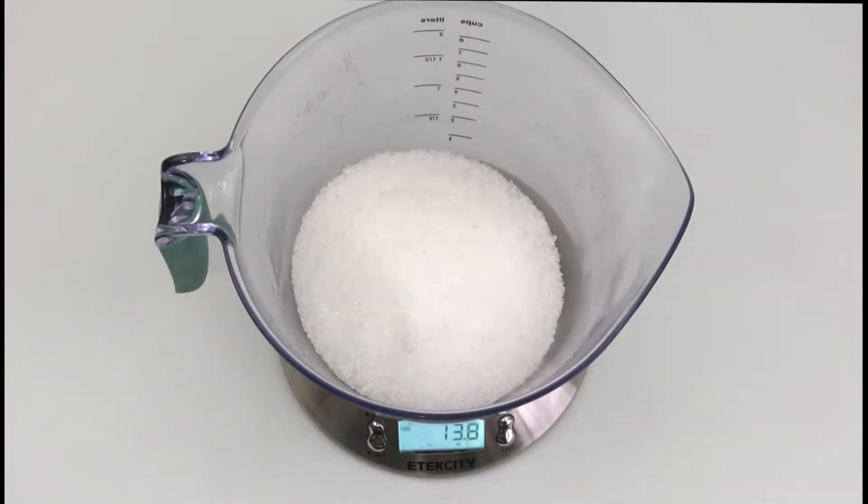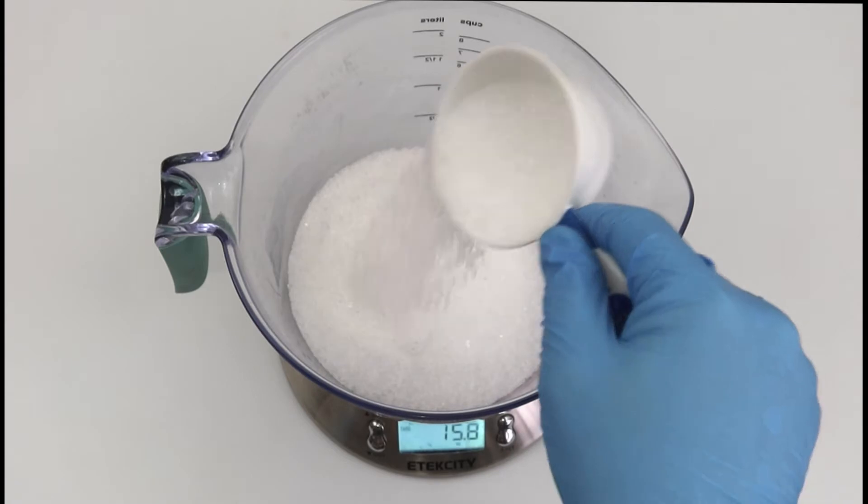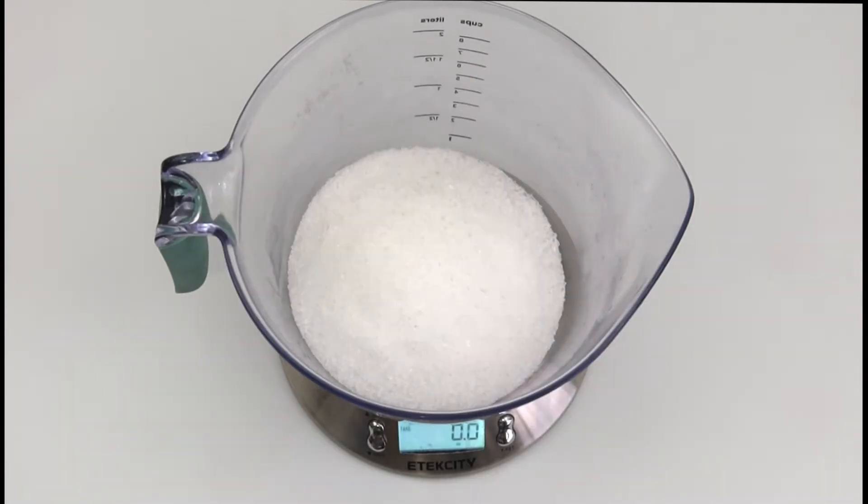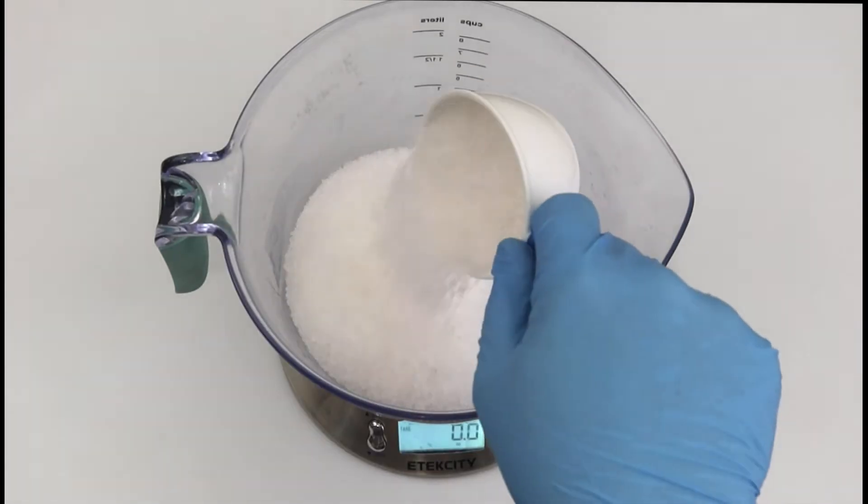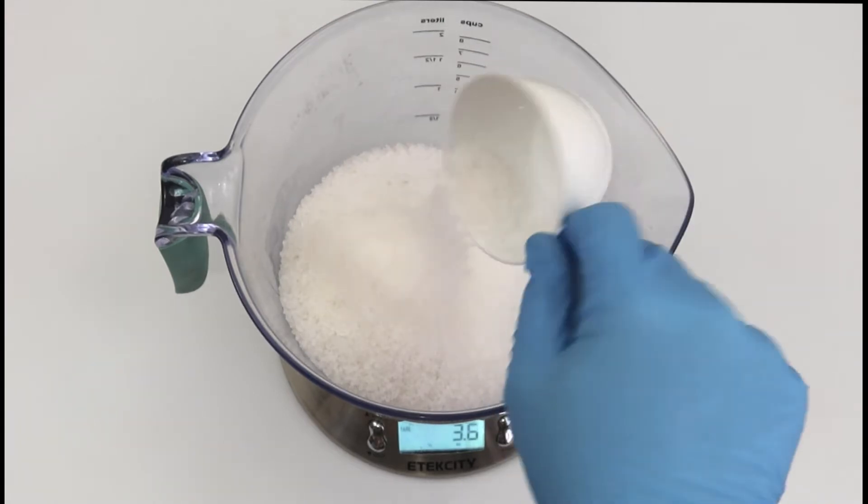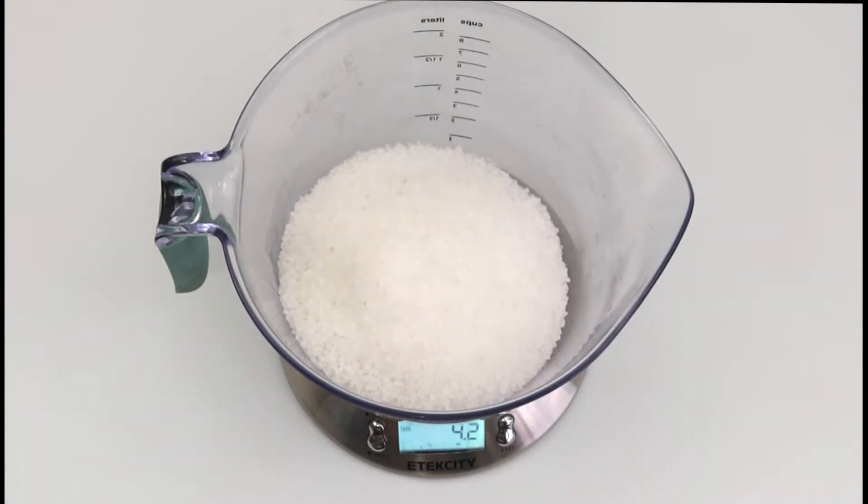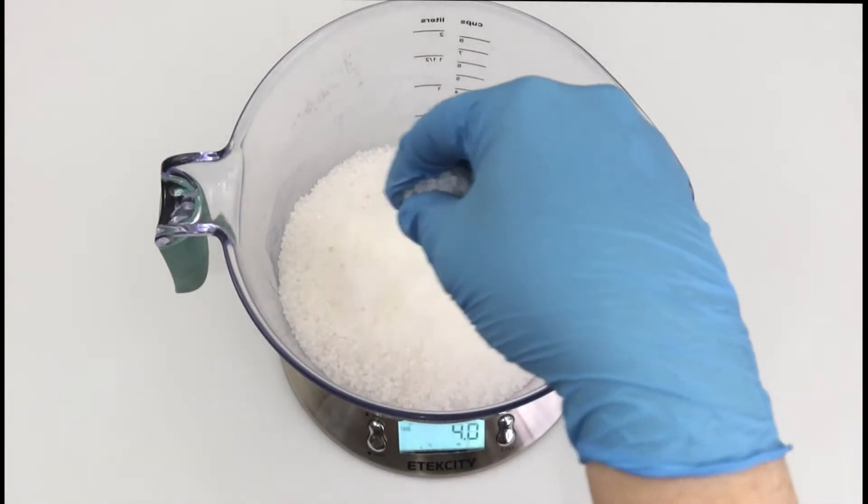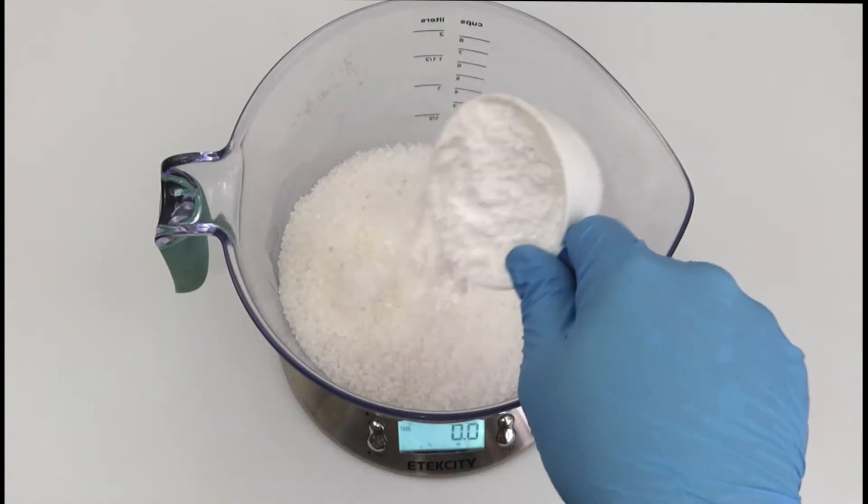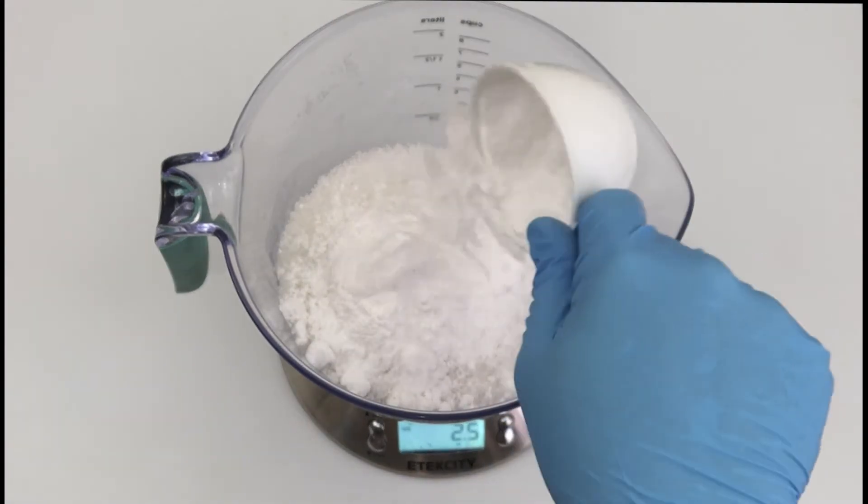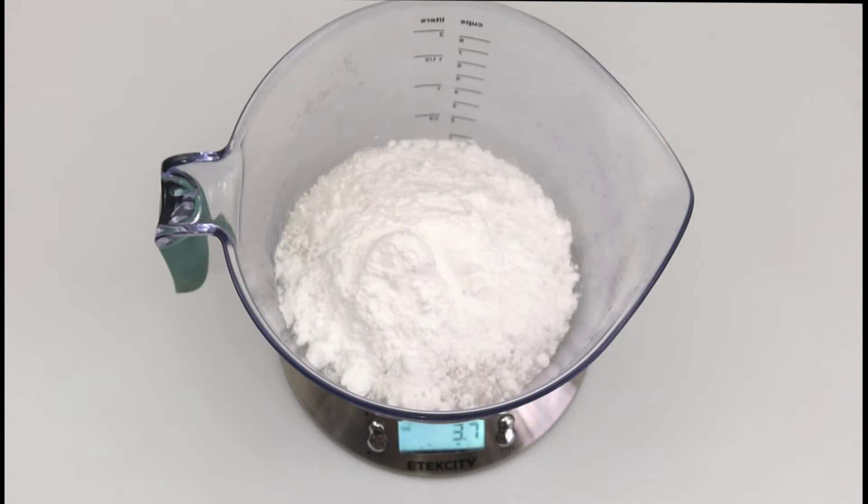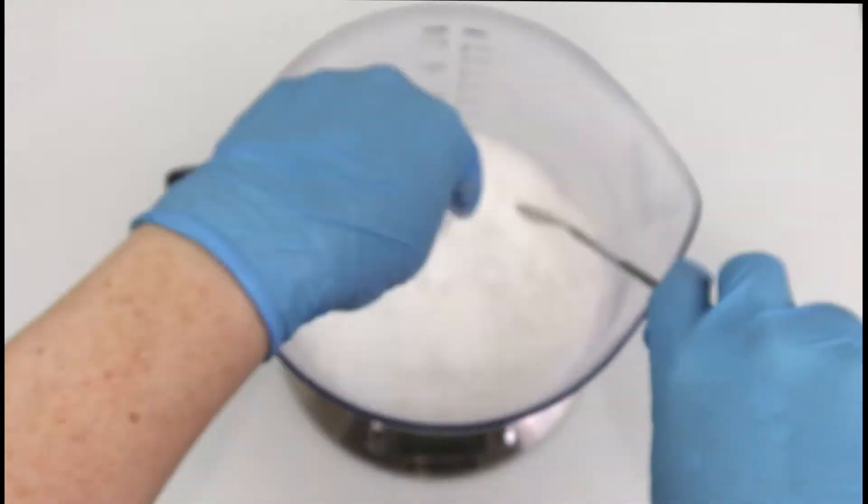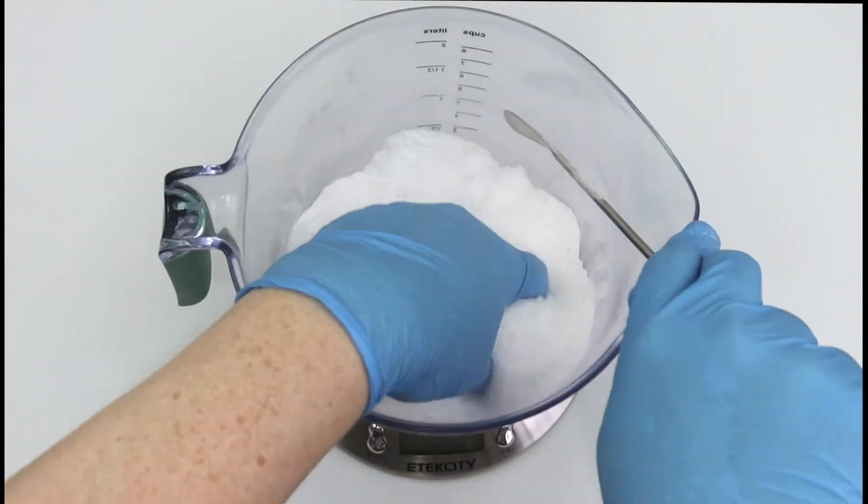So instead of just putting in two cups with a kitchen measuring cup, I weighed it out to be more precise. So I did 16 ounces of Epsom Salt. Following the Epsom Salt, I added four ounces or one half cup of coarse Dead Sea Salt and four ounces or one half cup of baking soda. Now we're going to give the mixture a quick stir to combine it.